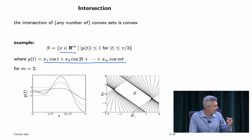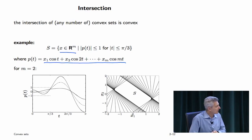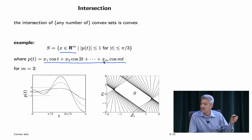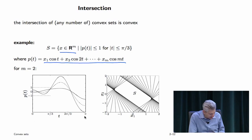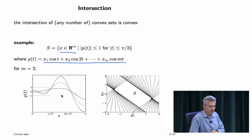S is the set of points in coefficient space where the corresponding trigonometric polynomial, plotted on [0, π/3], stays between -1 and 1. You might be tempted to try to write out an explicit formula for S in terms of the coefficients x. For small m you could do it, but around m=5, it becomes essentially impossible — there's no closed-form description of what it means to be in S.